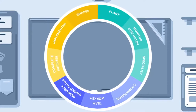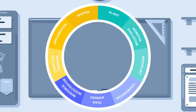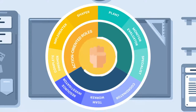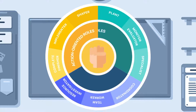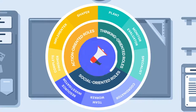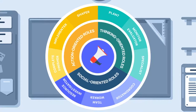Let's dive deeper into the model. Belbin's team roles can be grouped into three distinct orientations: action-oriented roles, thinking roles, and social-oriented roles.